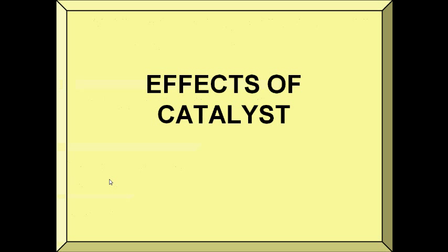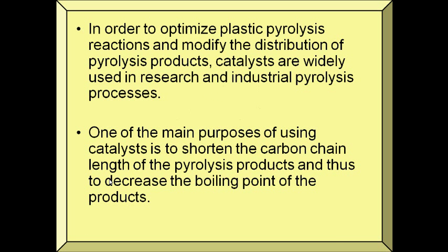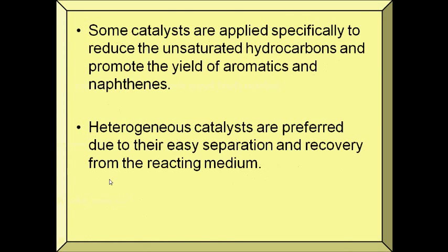Let's now proceed to the effects of catalyst. Catalyst helps to shorten the carbon chain and thus decreasing the boiling point of the product. It also increases the yield for liquid products and decreases the yield of char. Catalysts reduce the unsaturated hydrocarbons and promote the yield of aromatics and alkenes. Heterogeneous catalysts are preferred due to their easy separation and recovery from the reacting medium. The reactants diffuse to the catalyst's surface, adsorb into it, and experience chemical reaction. After the reaction, the products desorb from the surface and diffuse away.